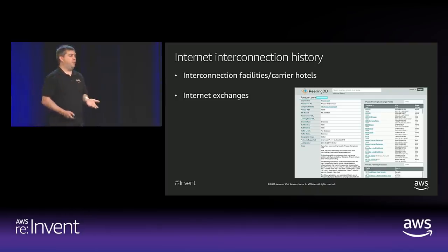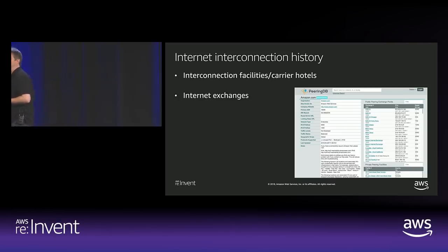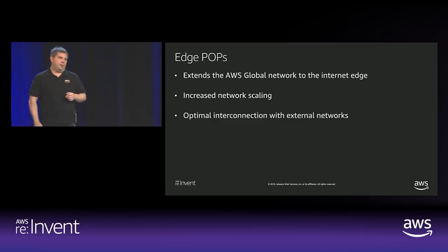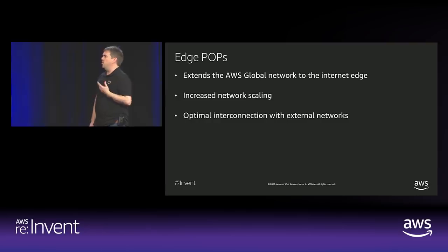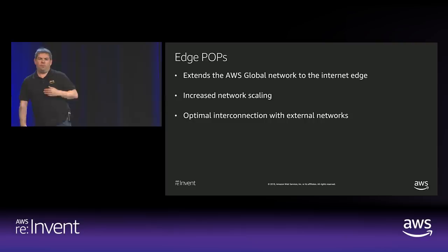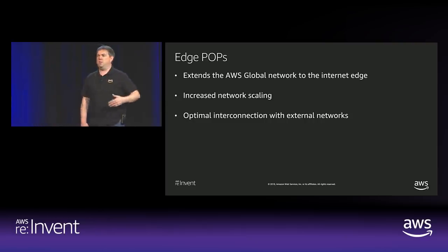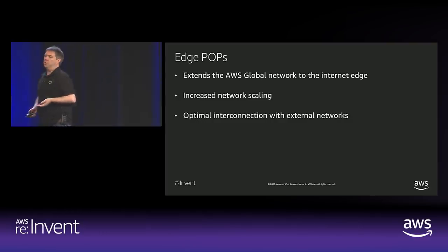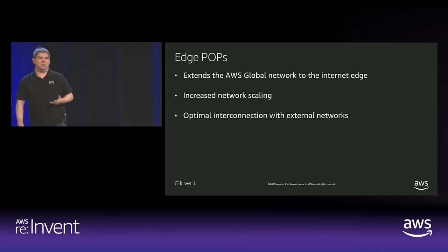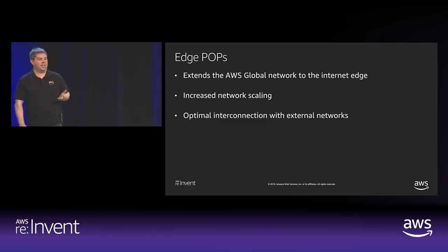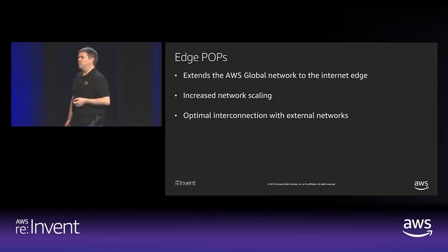Within those facilities, there's often the coexistence of something called internet exchanges — large fabric switches that all different providers can connect into, giving the option to connect with all of those different providers perhaps with just a low number of connections. Internet exchanges can span multiple buildings. The purpose of edge pops is to extend the edge of our network out further into the internet. The transit centers are associated with the region and physically located close to it, but we want to extend to what we call the internet edge. With our backbone network, if we place these edge pops out on that backbone much closer to where customers consume our services, we can get them onto our network much more easily.